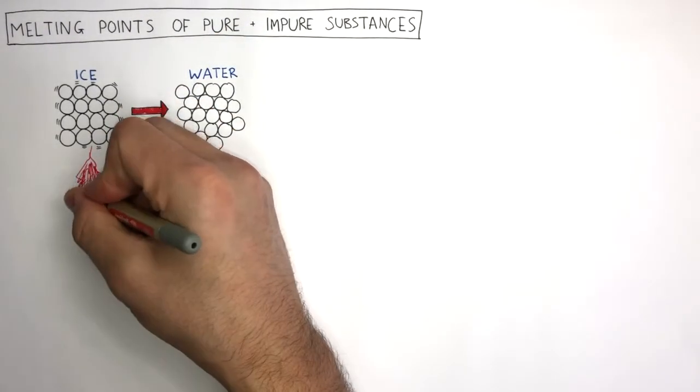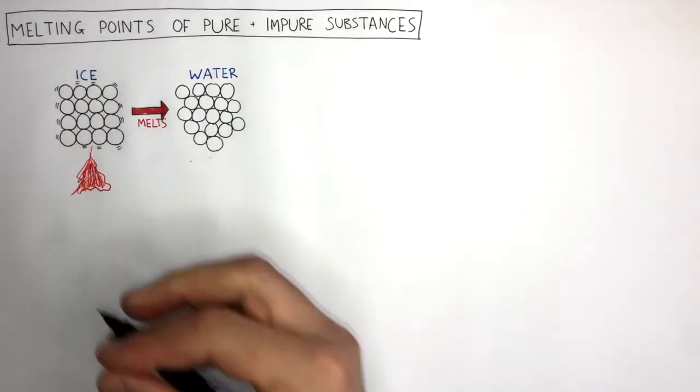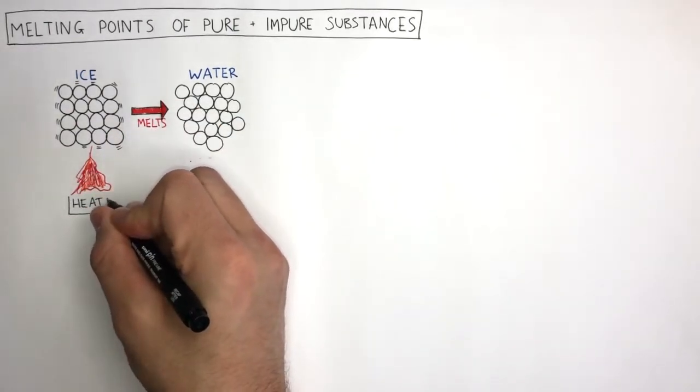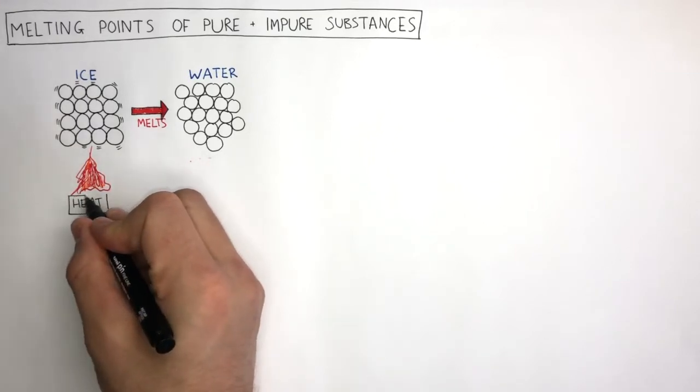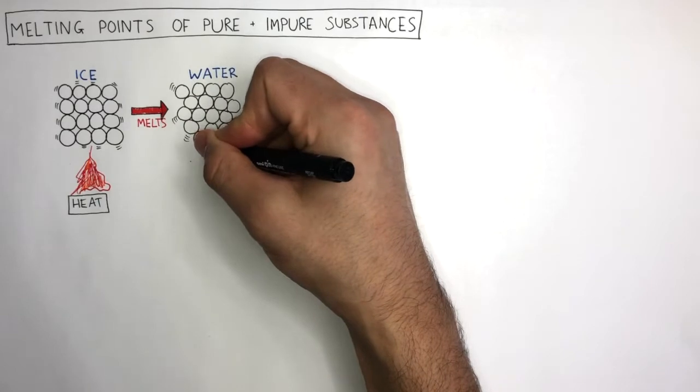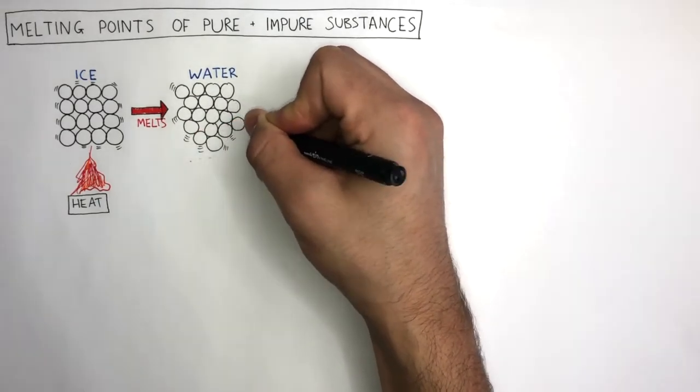This heat energy heats up the water molecules in the solid ice. The water molecules absorb the energy and they vibrate more. These bigger vibration lines show the greater movement. These water molecules can now flow around each other.